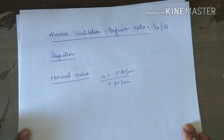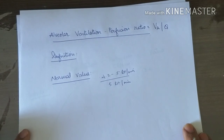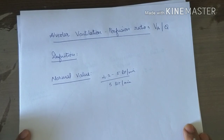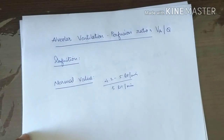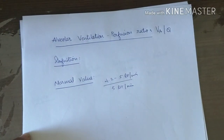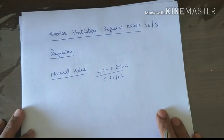It is important whether the ratio is present uniformly throughout the lungs, as that is essential for proper oxygenation. If it is not uniform, oxygenation will be defective. Now let us discuss the causes of non-uniform ventilation perfusion ratio.